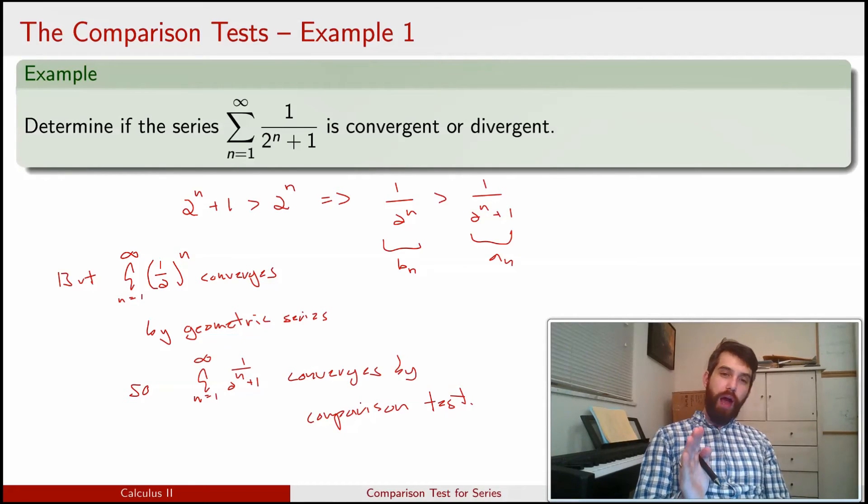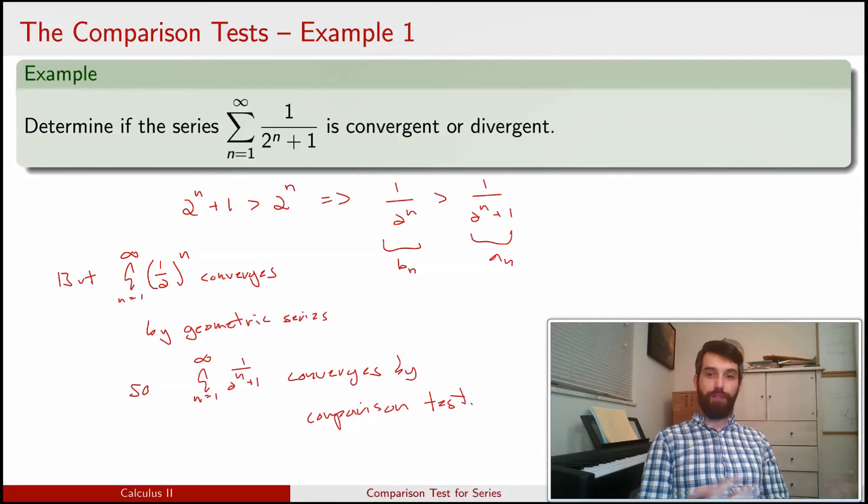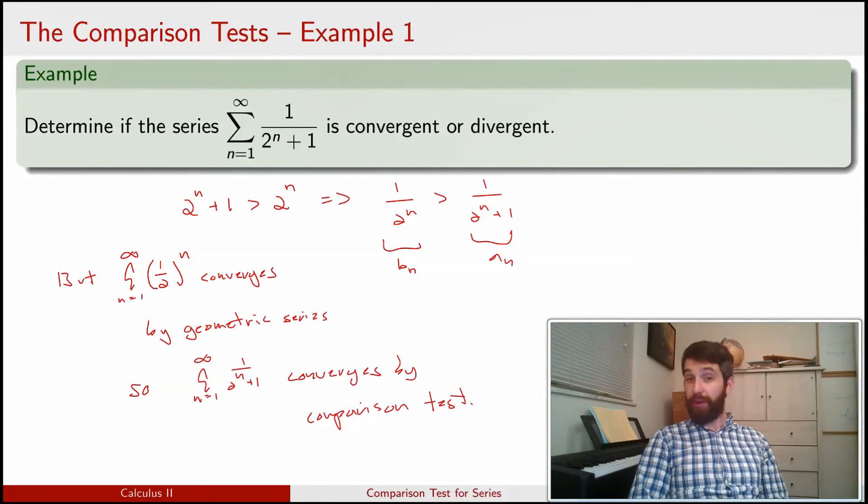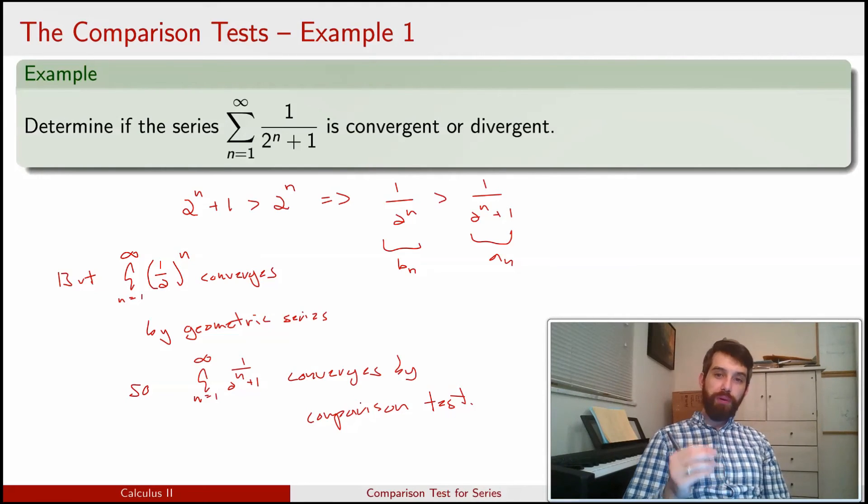Now note critically here, I'm not claiming what the value of this series is. I'm not claiming it converges to some number. We can figure out what the geometric series converged to. I'm not claiming that it converges to that number. I don't know what the answer is. All I'm claiming with the comparison test is that it does converge. This is exactly the same as the situation with improper integrals. We were never claiming that an improper integral converges to some value. We were just saying, by the comparison test for improper integrals, that it must converge.